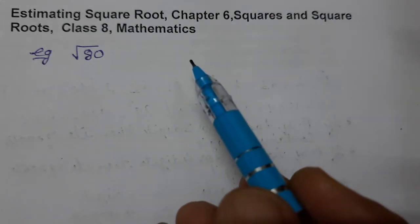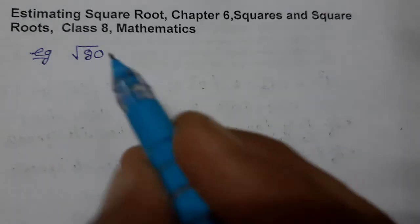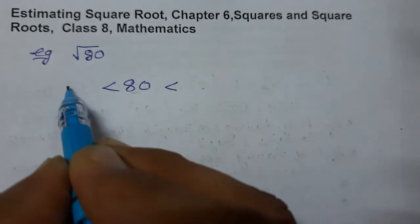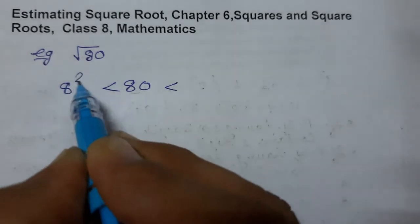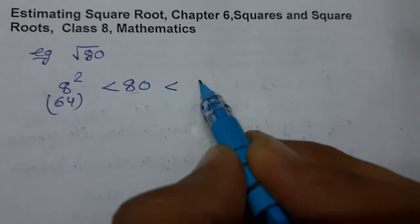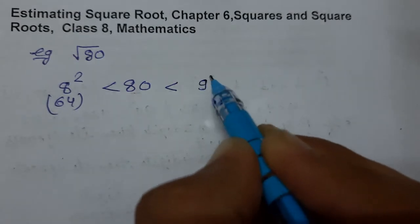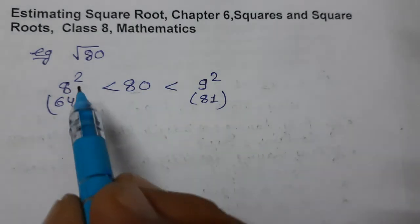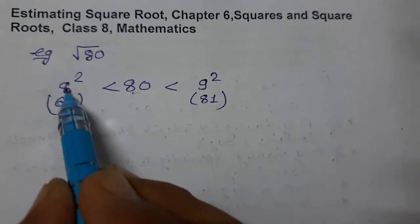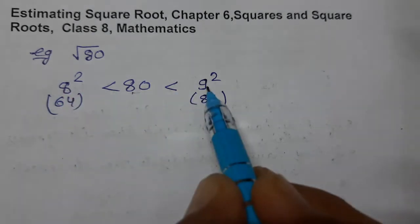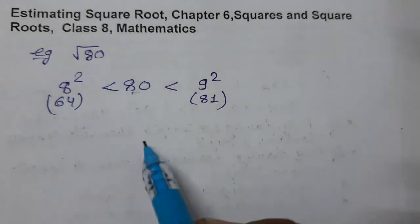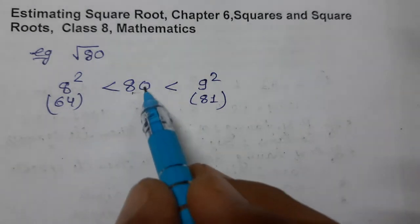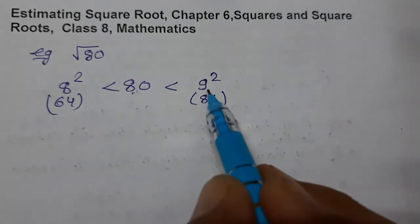9 squared is 81, and 8 squared is 64. So 80 lies between the square root of 8 and 9. We need to find out which is closer. It is very close to 9 squared, which is 81.